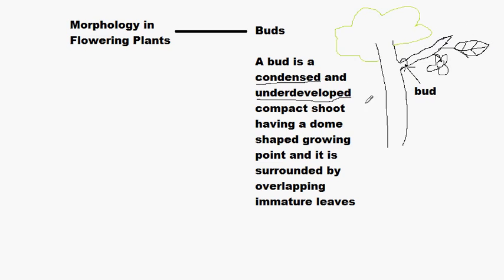The next keyword is underdeveloped. Underdeveloped means it has not developed yet. When it will develop — when the branch fully grows, leaves grow, flowers grow — then we will call it fully developed. But in the bud stage, it is not at all developed, so it is underdeveloped.